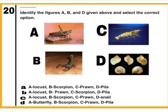Question 20: Identify the given four animals. A is locust, a gregarious pest. B is prawn. C is scorpion. All three are arthropods, which is the largest phylum of Animalia. D is Pila, a mollusk, which is the second largest animal phylum. Correct option is B. Mark B.